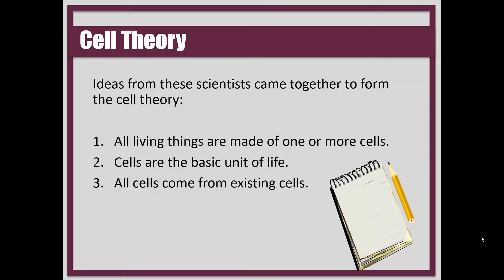Now, what is the cell theory? You definitely need to make sure that you get this down in your notes because we're going to talk about this for the entire unit. The cell theory was developed in part by many of the scientists we saw in the previous slide, and it has three components. First, all living things are made of one or more cells. Second, cells are the basic unit of life. Third, all cells come from pre-existing cells. At some point in this unit we are going to highlight one of those parts of the cell theory and dig a little deeper, but for right now just know the cell theory has these three components.